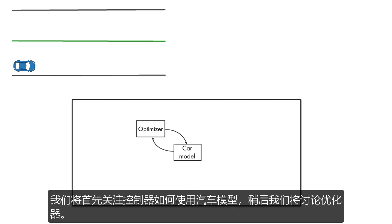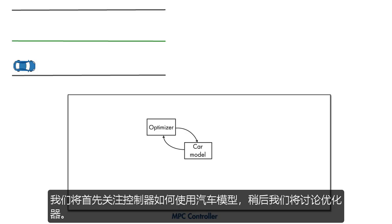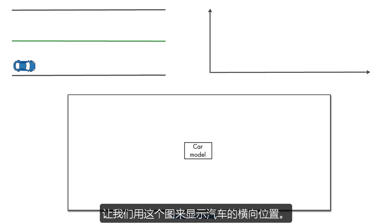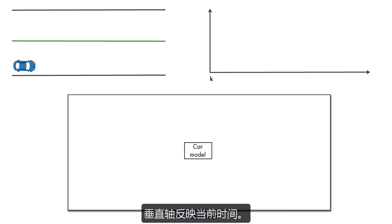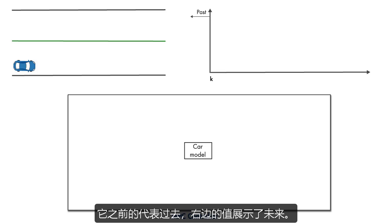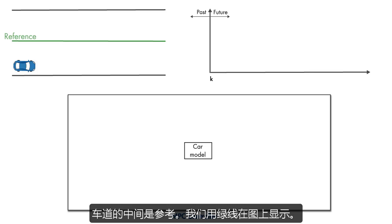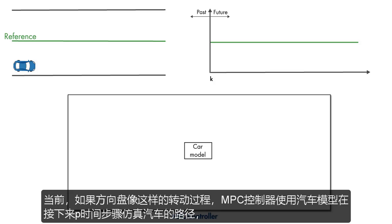We'll first focus on how the controller uses the car model, and later we'll discuss the optimizer. Let's use this plot to show the lateral position of the car. The vertical axis reflects the current time. Anything behind it reflects the past, and values to the right of it show the future. The middle of the lane is a reference. Let's use a green line to show it on the plot.